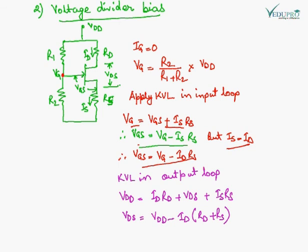Applying KVL in the output loop, we get VDD equals ID RD plus VDS plus IS RS. With this, we can write VDS equal to this. So we got the drain to source voltage here.